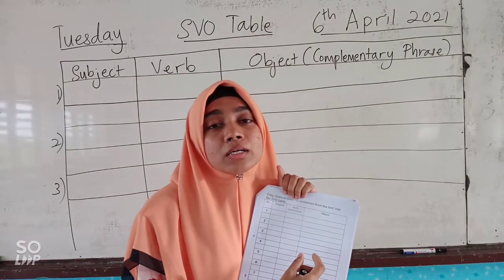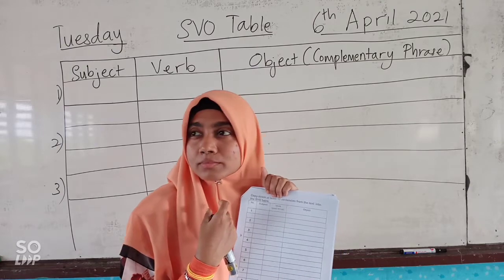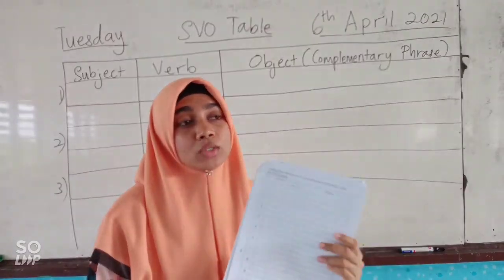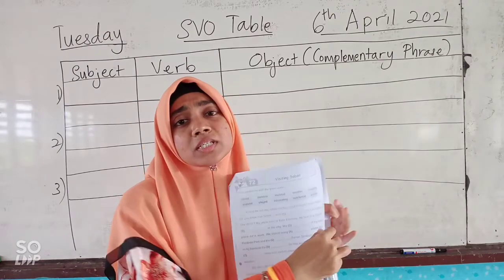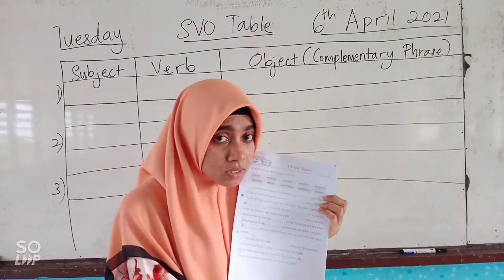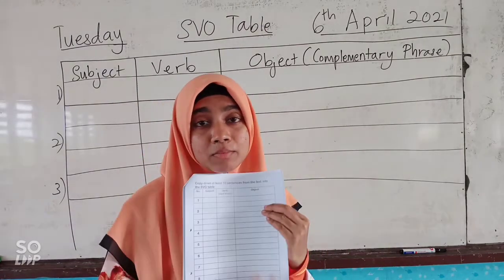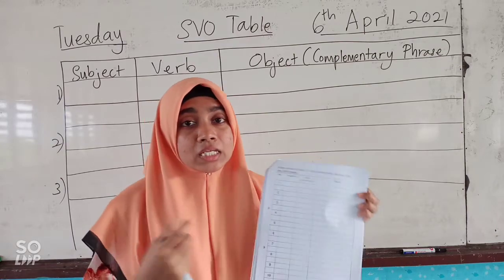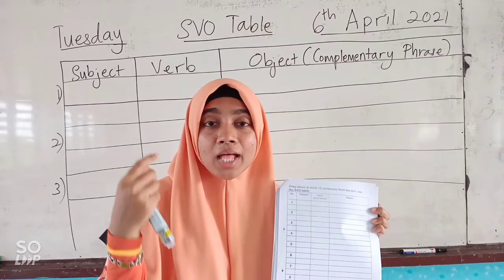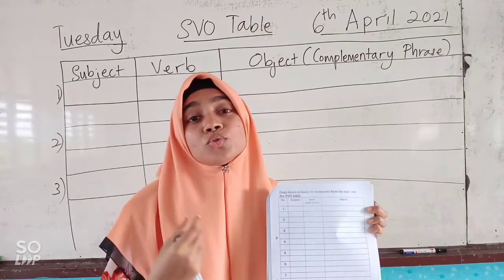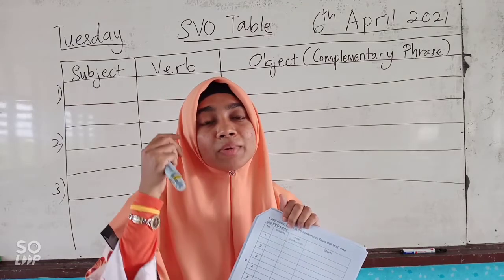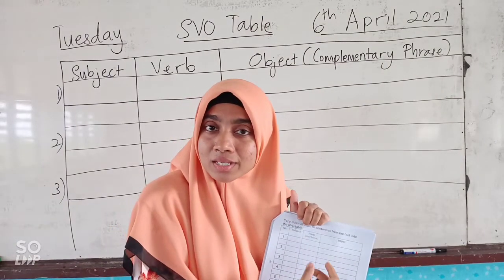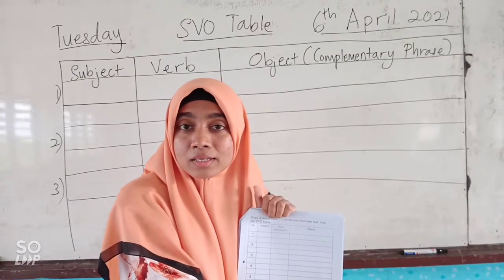Teacher nak ajar basic ways — cara-cara yang asas untuk menulis ayat. So we are going to start with a simple text like this. You fill in the blanks, you read first and then analyze them into the SBO table. Bila kamu dah boleh kenal pasti yang mana satu subjek, kamu akan ingat. It will help your memory to identify which word to put first to start a sentence, and what comes next, and how to complete the sentence.